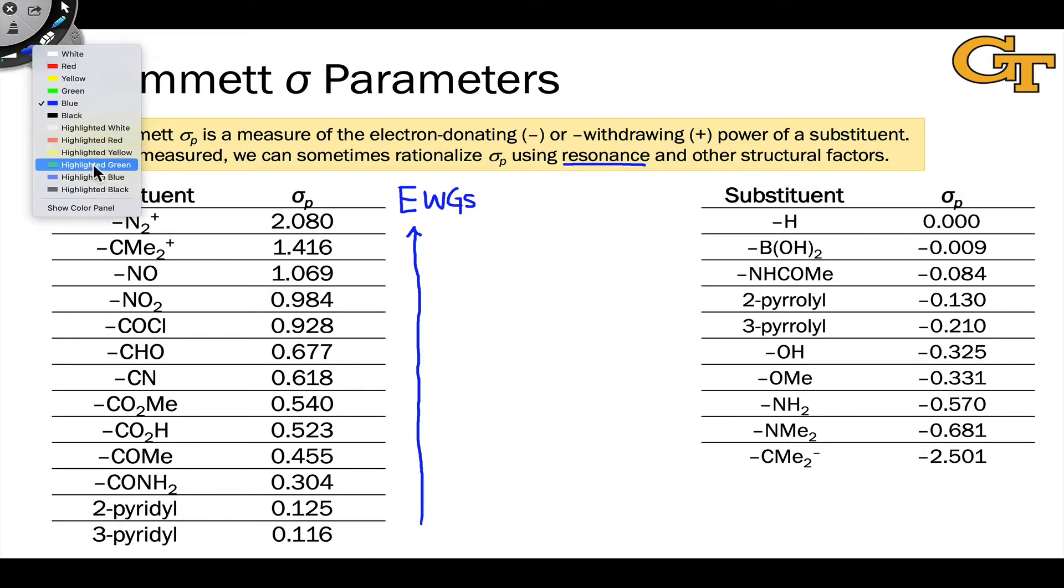For example, it would make sense that an acyl chloride, which is the group COCl, is going to be a stronger withdrawing group than say an amide, CONH2, because chlorine is more electronegative than nitrogen, withdraws electrons more strongly, and sure enough, the sigma p value for the acyl chloride group is greater than the sigma p value for the amide.